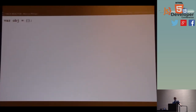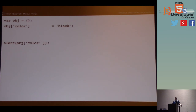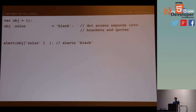Let's talk about objects and property access and where people get tripped up. If you have an object and you want to assign a property to it, it's as simple as using brackets and passing a string in between the brackets. When you want to access that property later, you do the same thing — this would alert 'black'. Dot access expands into bracket access, so if you've seen dot access to an object, it's really an alias for the same thing.